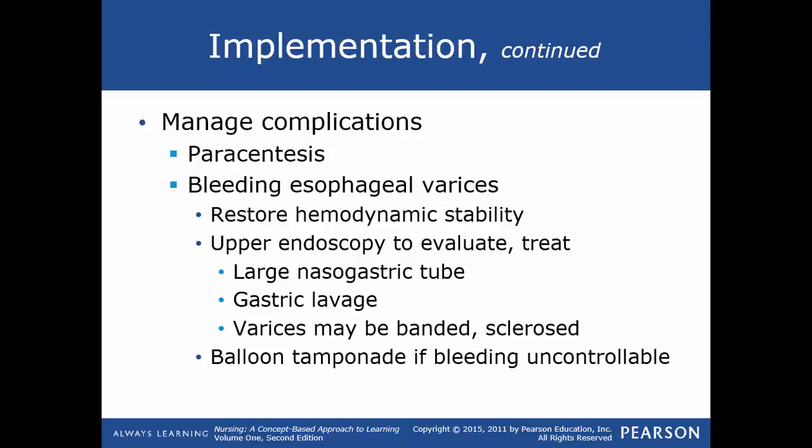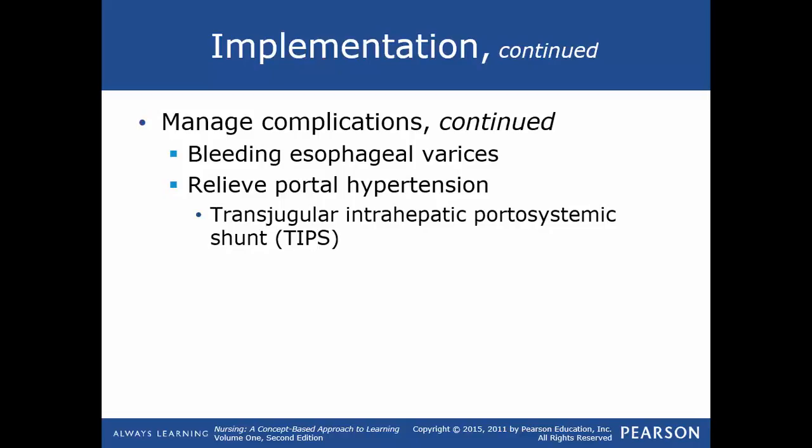There is a risk of aspiration and airway obstruction with balloon tamponade. Tissue ischemia and necrosis can occur from the balloon pressure itself. An endotracheal tube is usually inserted before the NG tube to support the airway and decrease the risk of aspiration.